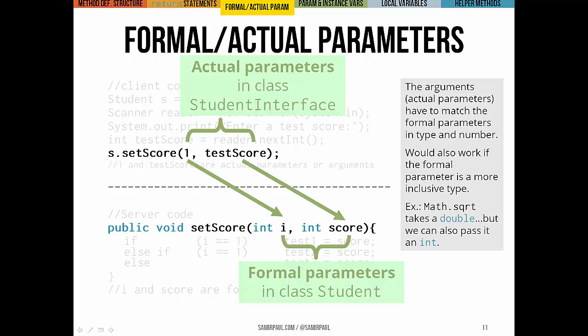Sort of important to note, score and testScore here, the formal and actual parameters, are actually independent of each other. So changing score in the server-side code in our student class doesn't actually change testScore, and changing testScore wouldn't actually change score after we had already called the method.